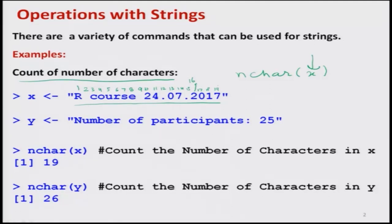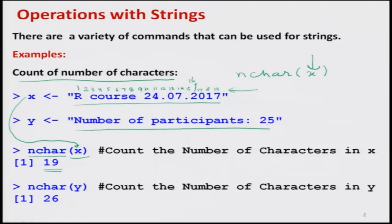When I use the command NCHAR and inside the bracket I write x — meaning I want to count the number of characters in this string — you can see we have counted 19 characters and the answer comes as 19. Similarly, if I take another string 'number of participants: 25', instead of counting by 1, 2, 3, 4, I can use the command NCHAR on Y and it gives the answer as 26.